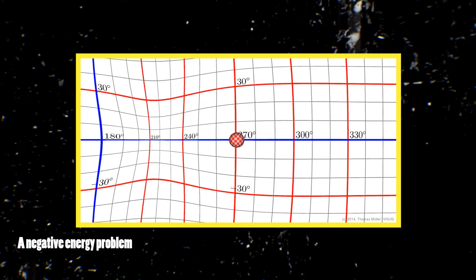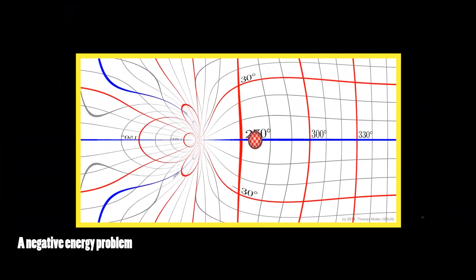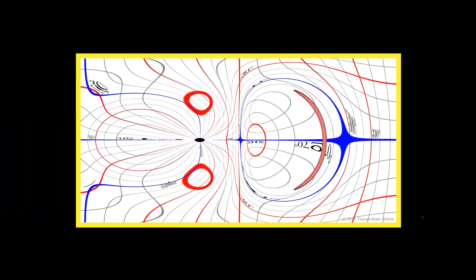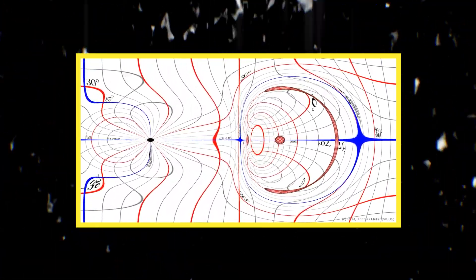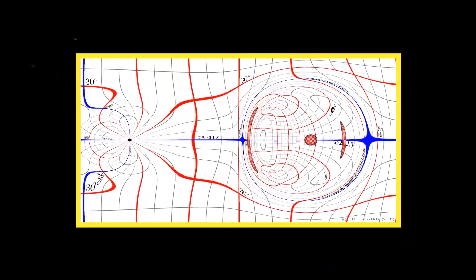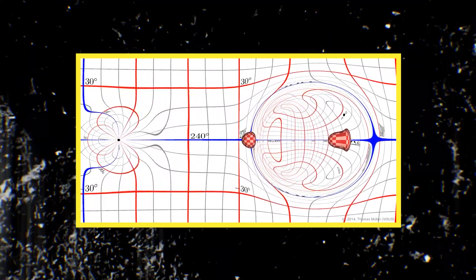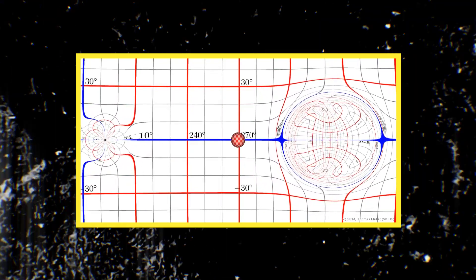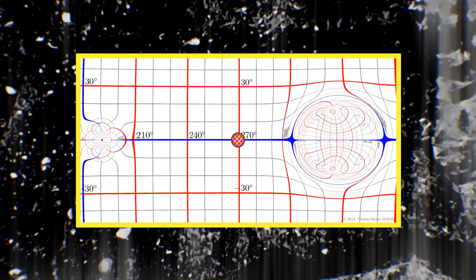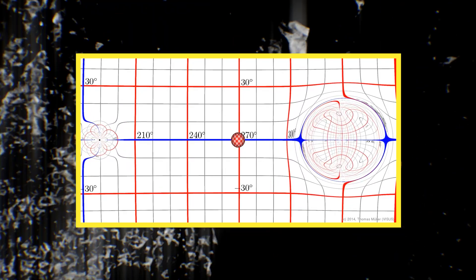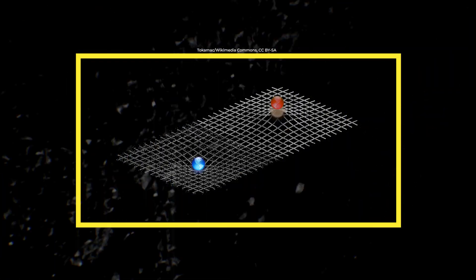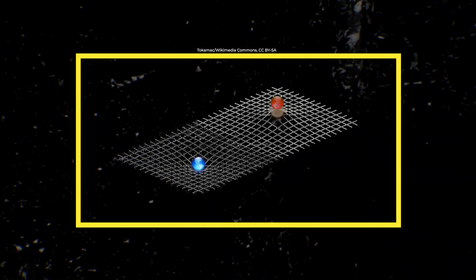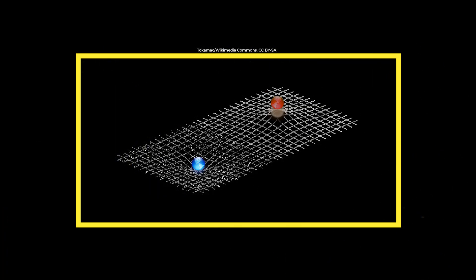Alcubierre's warp drive would work by creating a bubble of flat space-time around the spaceship and curving space-time around that bubble to reduce distances. The warp drive would require either negative mass, a theorized type of matter, or a ring of negative energy density to work. Physicists have never observed negative mass, so that leaves negative energy as the only option.